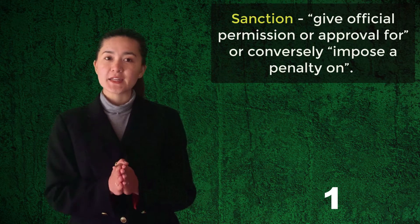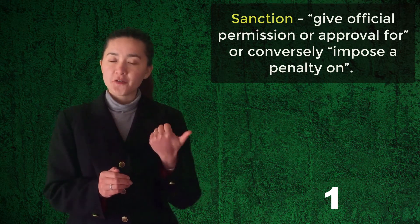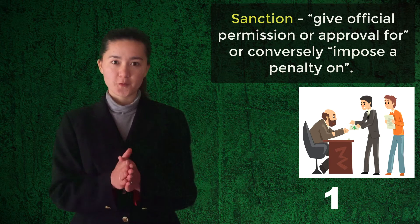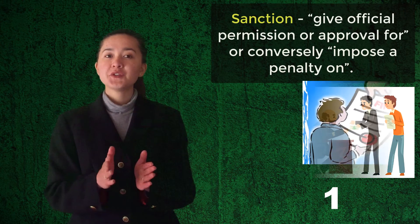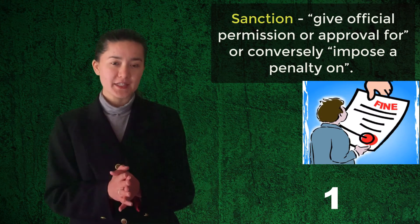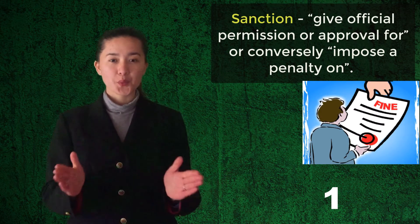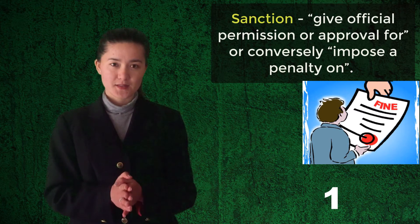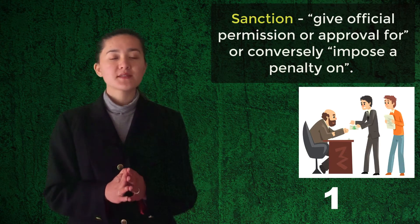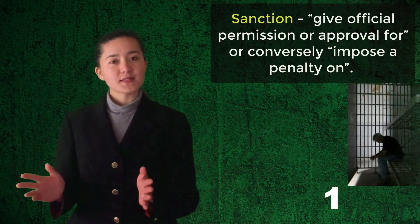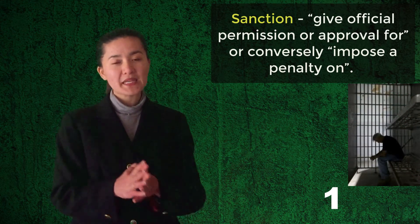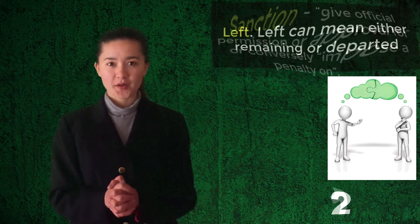Now we'll learn about some autoantonyms and their use in sentences. The first word is 'sanction.' It can mean to give official permission or approval for something. The contrary meaning can be to impose a penalty on something. Here's the usage in two different sentences: 'We received a sanction to proceed with the scheme.' 'Prison is the best sanction for many heinous crimes.'